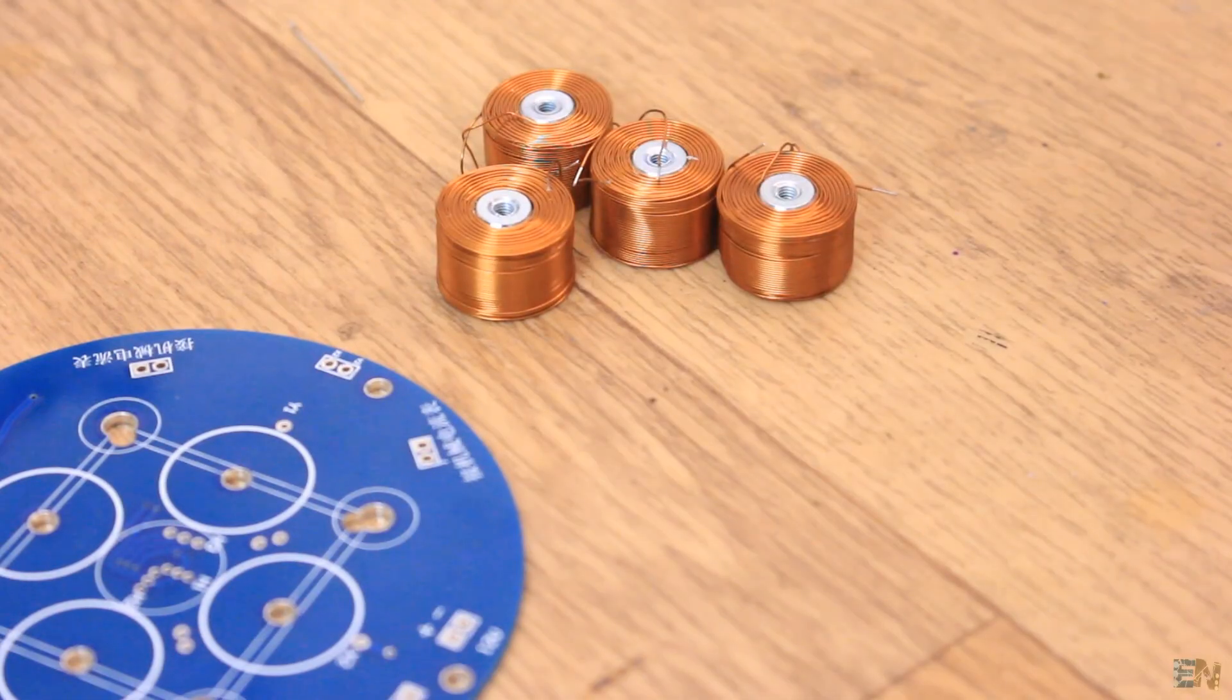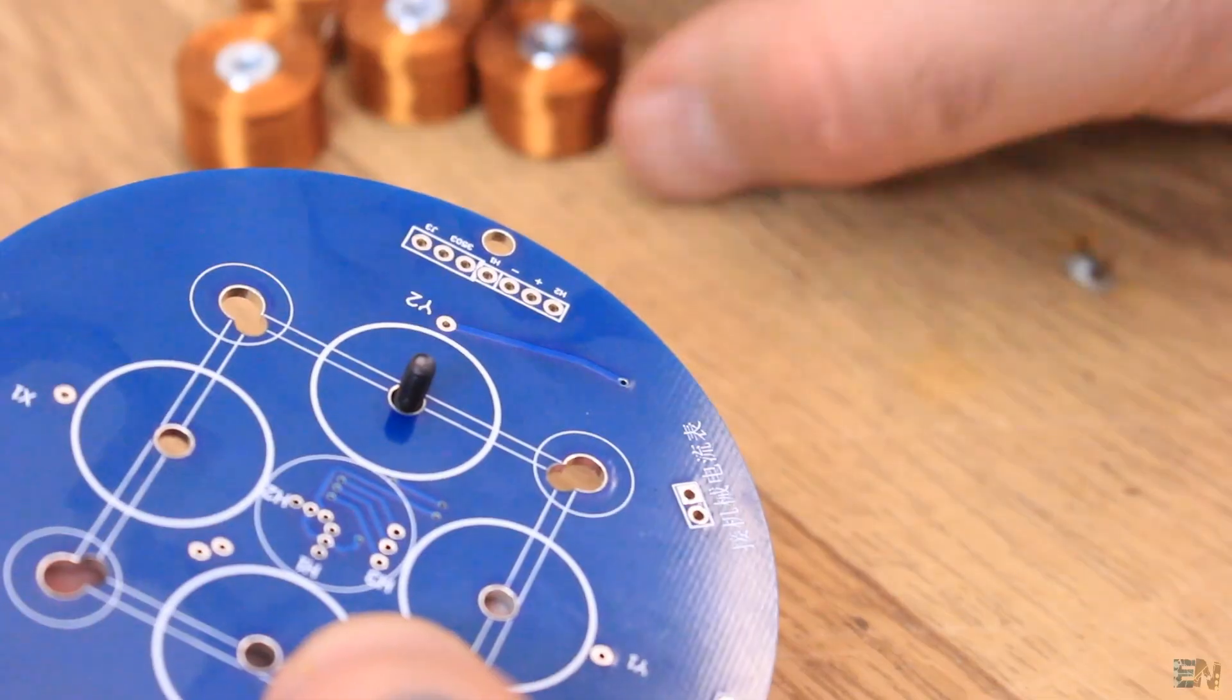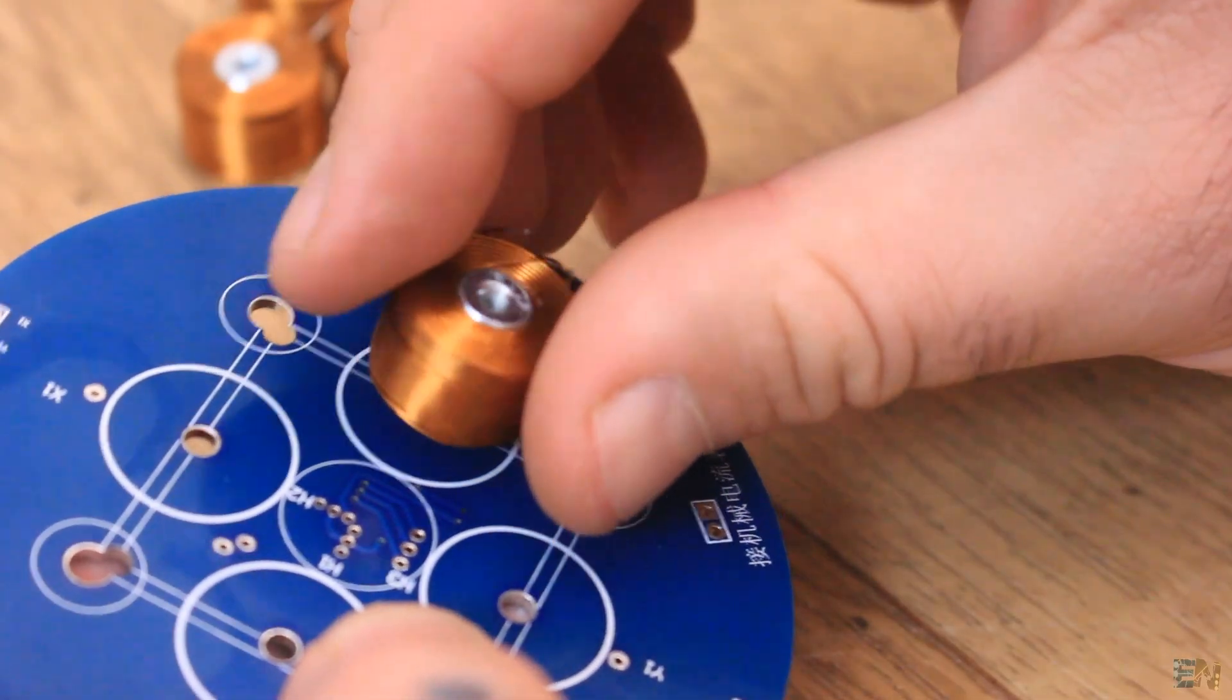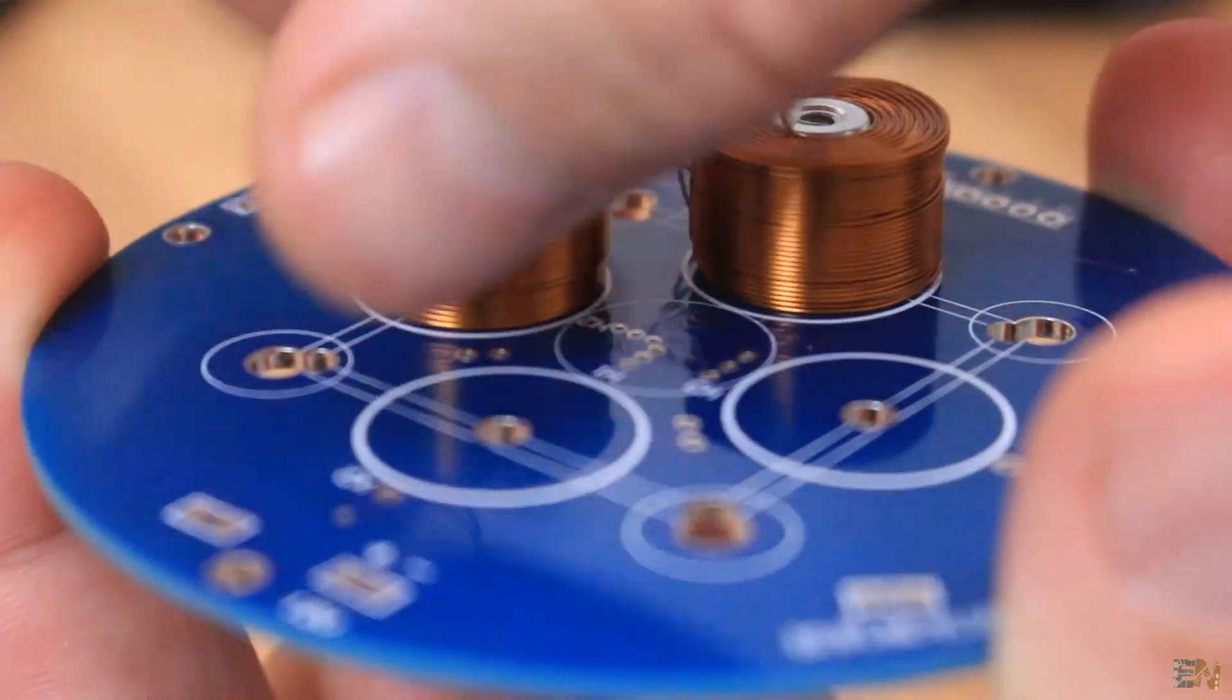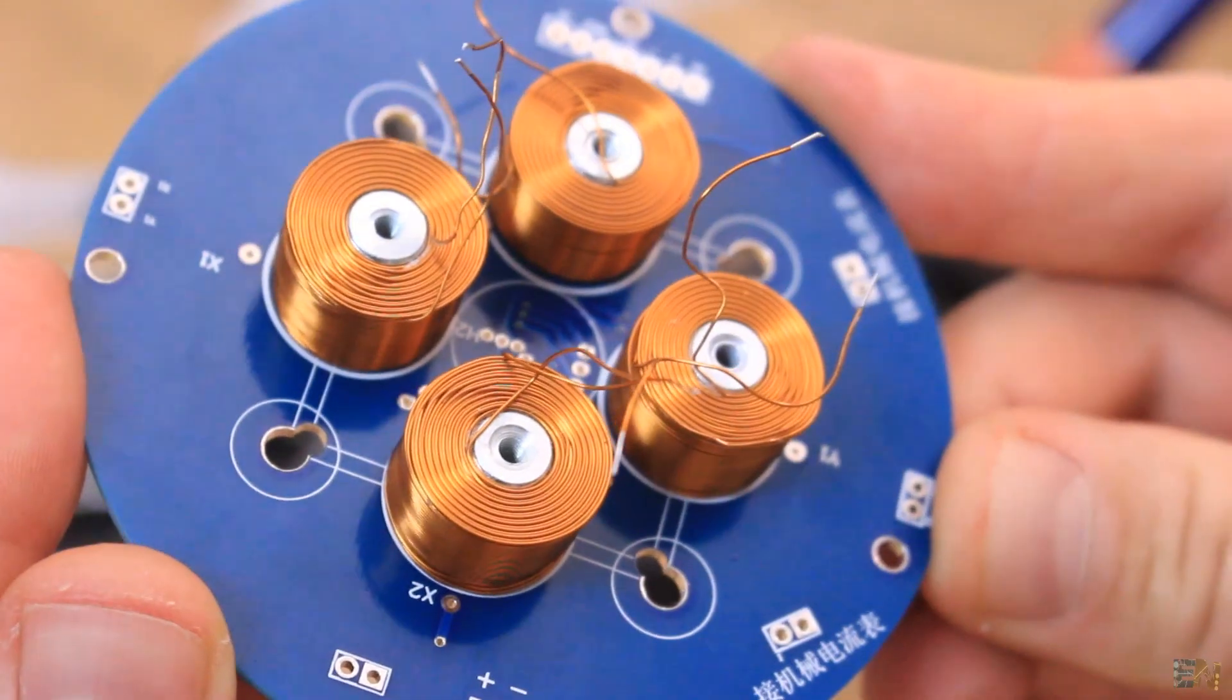First we have to place the coils. Place the screw on the bottom side of the PCB. Add the coil with the input cables on the upper side and then we tie the screw. Now I do this for all four coils.